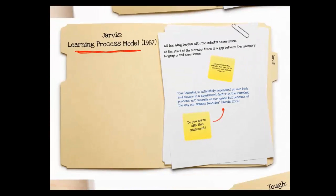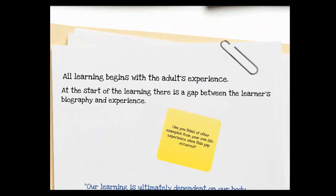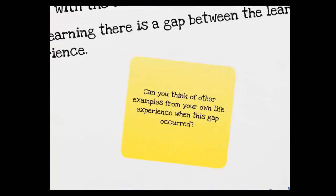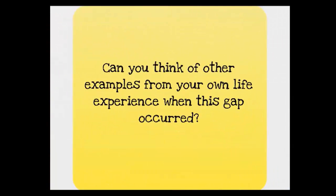Jarvis developed a learning process model and stated that all learning begins with the adult's experience. At the start of learning, there is a gap between the learner's biography and experience. For example, if something happens that is new to us or that we are not ready to handle, such as becoming a parent, getting a driver's license, leaving home, or going to post-secondary education or other life events. Can you think of some other examples from your own life experience when this gap occurred?